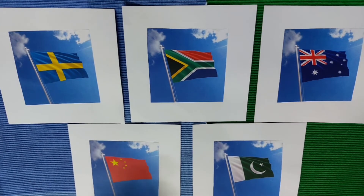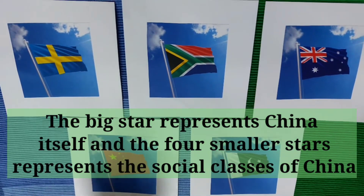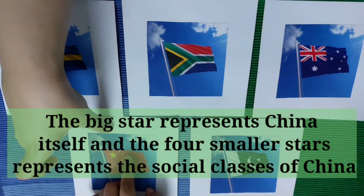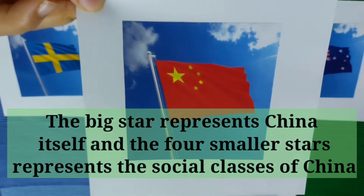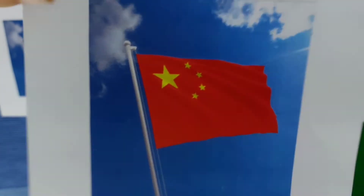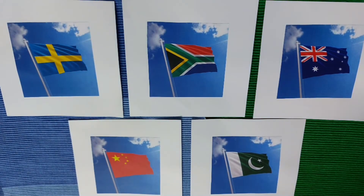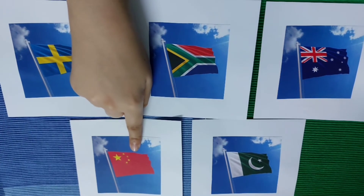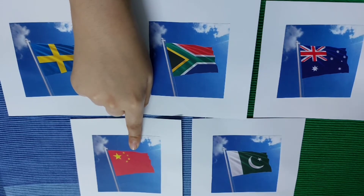This is the Chinese flag. The biggest star represents China itself, and the four smaller stars represent the social classes of China: the working class, the peasants, the urban middle class. The five stars and their relationship represent the unity of the Chinese people under the leadership of the Communist Party of China.